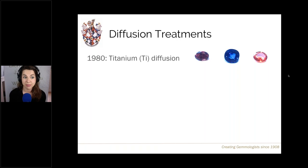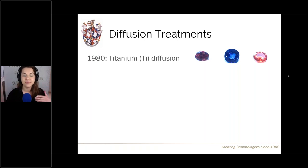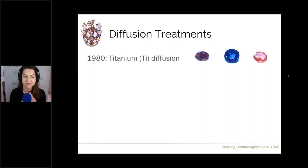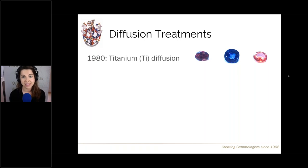Diffusion treatments were first seen commercially on the market in 1980 with titanium-diffused sapphires. This is where we diffuse the element titanium into sapphires that contain iron; together those elements make pairs creating really intense blue colouration. When it comes to titanium diffusion in corundum, it only goes to a very shallow depth — maximum about half a millimetre, so 0.5 millimetres.